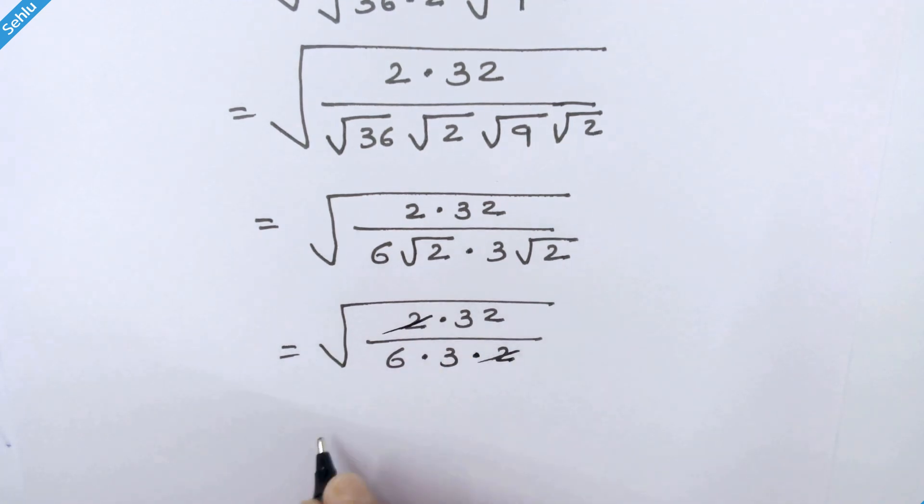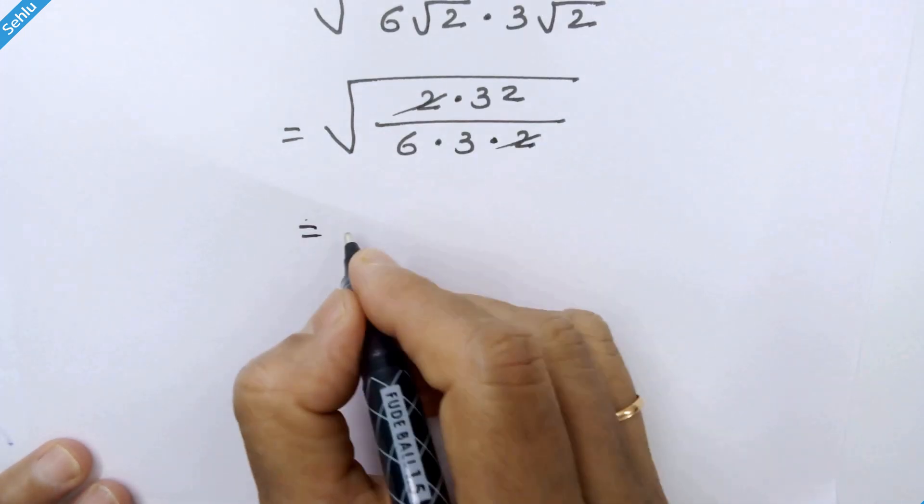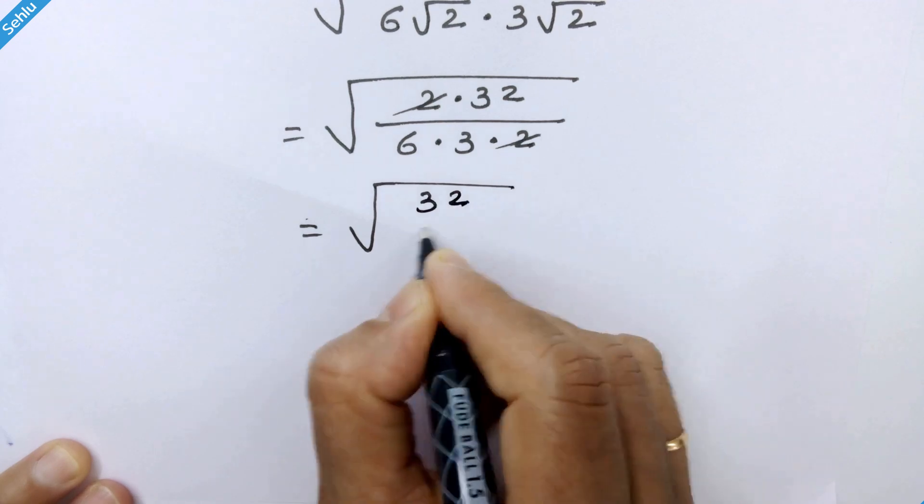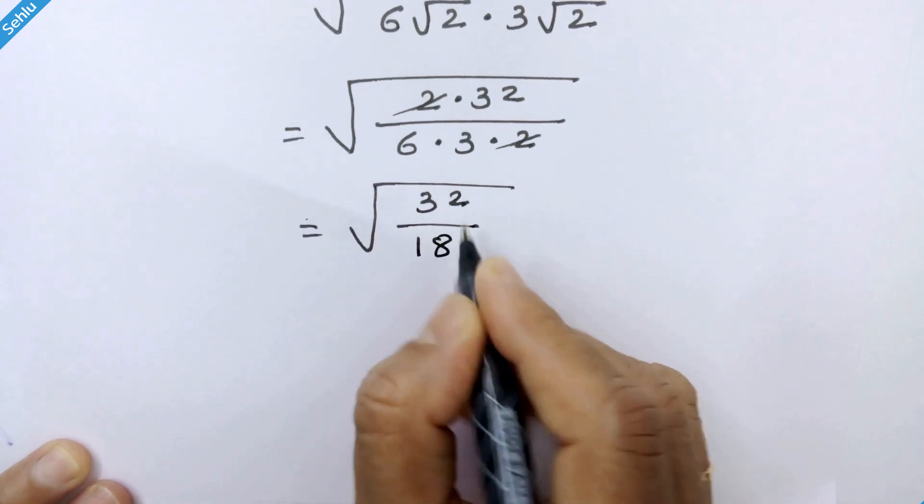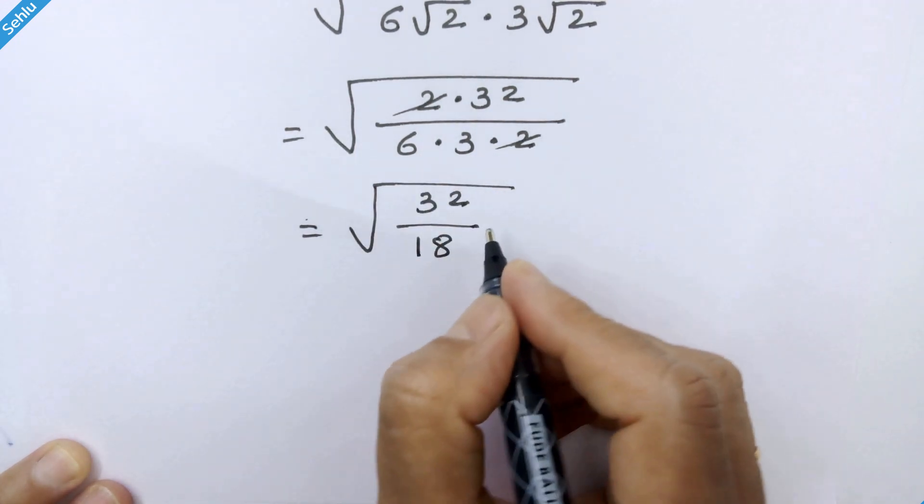So these 2 get cancelled out. Now we have square root of 32 over 18. 6 times 3 is 18.